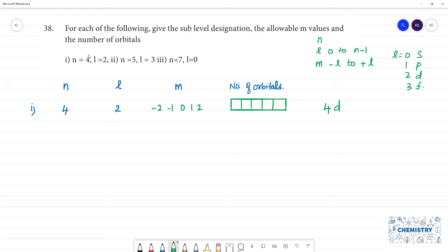Next, second. n value 5, l value 3. So l is 3, m value minus 3, minus 2, minus 1, 0, 1, 2, 3. So 1, 2, 3, 4, 5, 6, 7 orbitals.